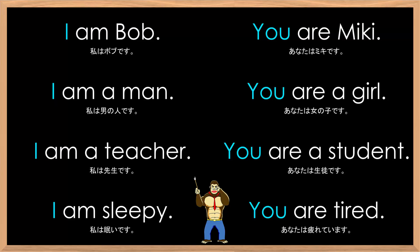Let's try this at a normal speed. I am Bob. You are Mickey. I am a man. You are a girl. I am a teacher. You are a teacher. You are a student. I am sleepy. You are tired.